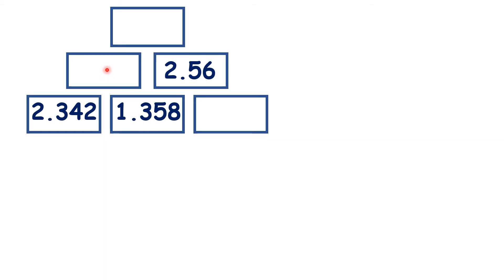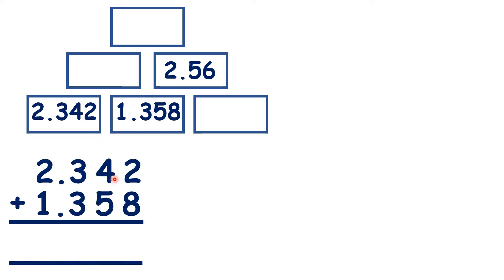We can find this brick here by adding the 2 bricks below. So that's 3.700. But we don't usually write decimals with zeros at the end because the number 3.7 already tells us that we have exactly 3 units, 7 tenths, and no extra hundredths or thousandths. So let's just write 3.7.